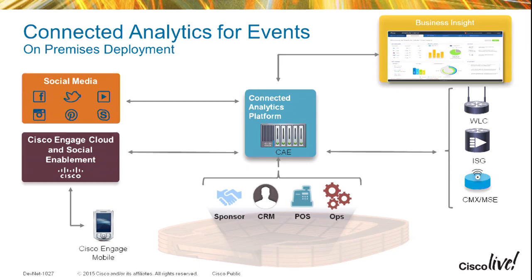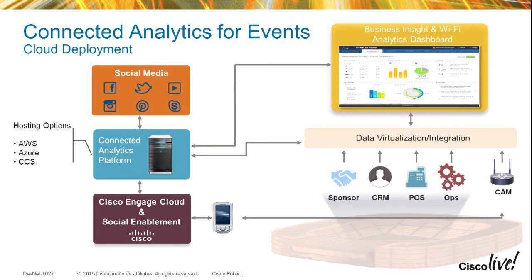We're also consuming click-stream type data from third-party vendors. For example, if a negative Twitter feed goes out, we can key in on that in real time — which is very powerful. We also have Facebook integration to identify likes or dislikes and take action on that. That comes through our network-based application recognition, NBAR2 data. We're also pulling in third-party vendor statistics, making it a powerful integration.